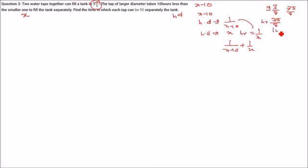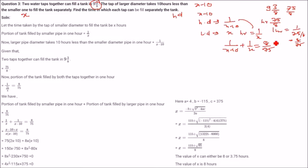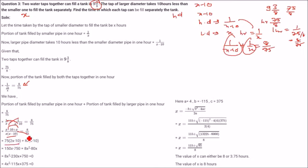When you combine the two: 1 by X minus 10 plus 1 by X. The total time is 9 and 3 by 8 hours. We write that as 75 by 8 hours. So in one hour, the combined fill is 1 divided by 75 by 8, which is 8 by 75. So 1 by X minus 10 plus 1 by X equals 8 by 75. X minus 10 goes here, X goes here, X into X minus 10 remains in denominator. This becomes 2X minus 10. Multiplying 75 by 2X minus 10 and 8 by X squared minus 10X gives 8X squared minus 80X.